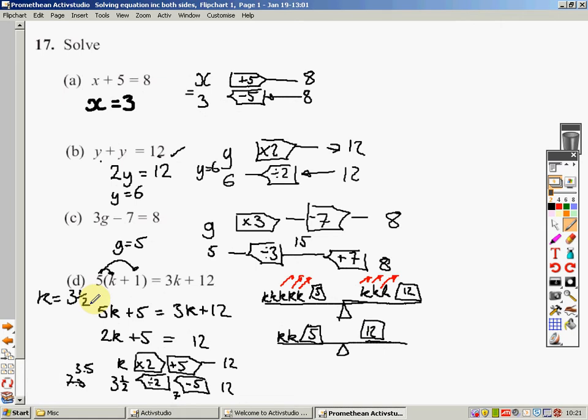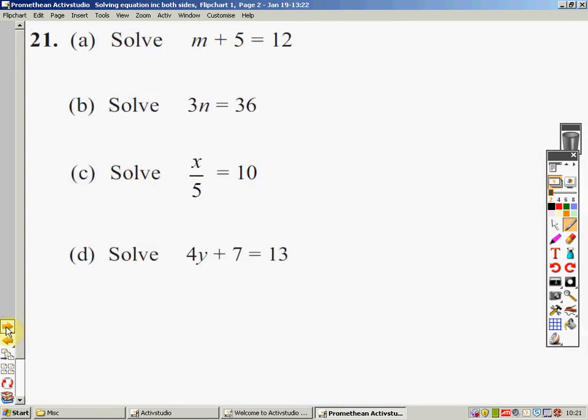I hope that's helped you. You could now check, k there, 3.5, 3.5 plus 1, 4.5 times 5. Is that going to balance with 3 times 3.5 plus the 12? Some questions for you to do there. If you press pause now, I'll come back in a minute.